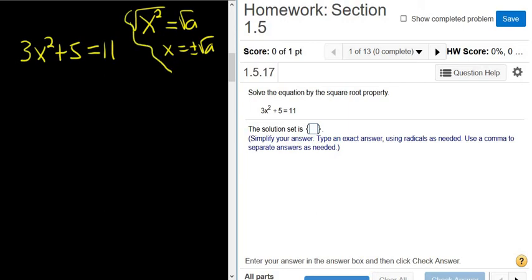So in this problem here, we don't have x squared by itself yet. So step one is to isolate the x squared. So you subtract 5 from both sides. So you have 3x squared, and then 11 minus 5 is equal to 6. Then divide by 3.